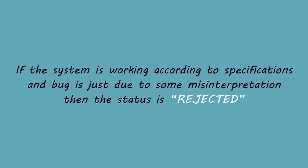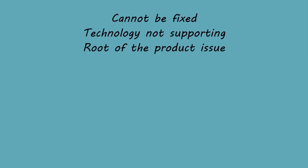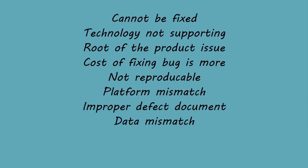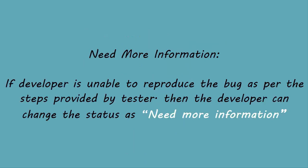Rejected: if the system is working according to specifications and the bug is just due to some misinterpretation, such as referring to old requirements or extra features, then the team lead or developers can mark such a bug as 'rejected'. Some other states of bugs are: cannot be fixed, technology not supporting, root of the product issue, cost of fixing bug is more, not reproducible, platform mismatch, improper defect document, data mismatch, build mismatch, inconsistent defects. Need more information: if the developer is unable to reproduce the bug as per the steps provided by the tester, then the developer can change the status to 'need more information'. In this case, the tester needs to add detailed reproducing steps and assign the bug back to the development team for fix. This won't happen if the tester writes a good defect document.